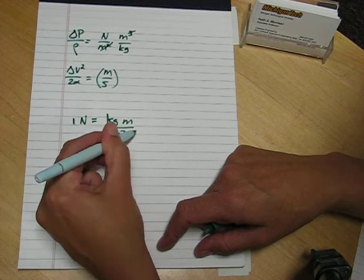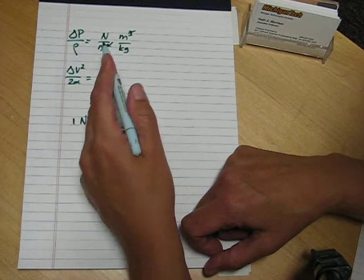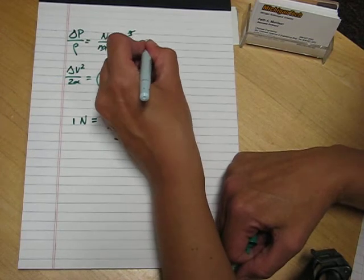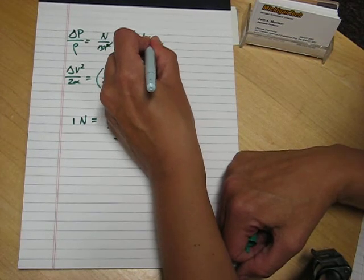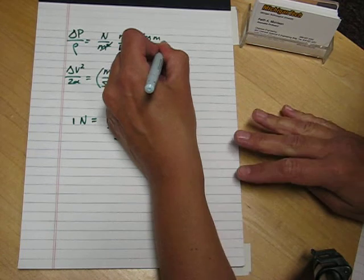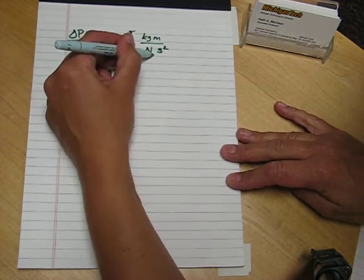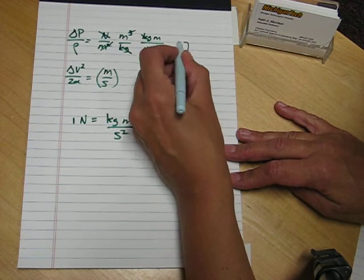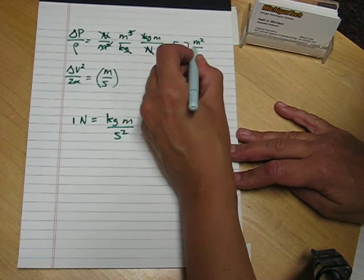We can use this definition of this force unit to convert the newton in the pressure term. One newton is a kilogram meter per second squared. And now it's in units of meters squared per second squared.